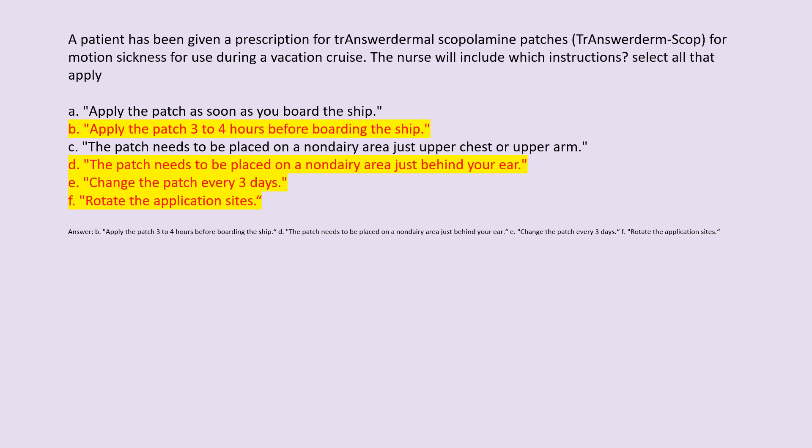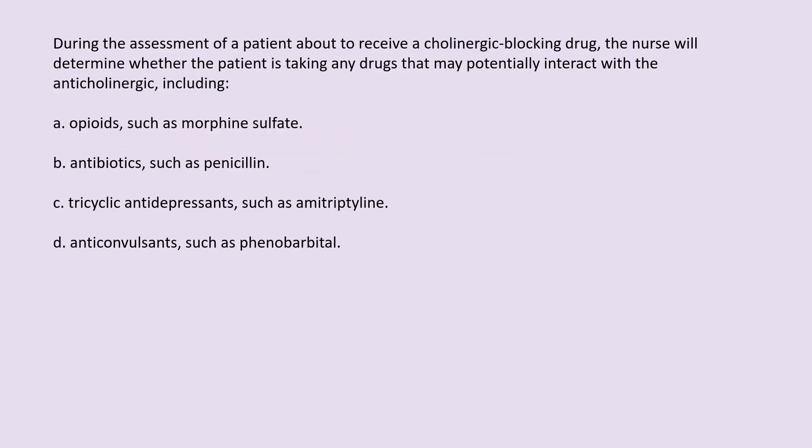During the assessment of a patient about to receive a cholinergic-blocking drug, the nurse will determine whether the patient is taking any drugs that may potentially interact with the anticholinergic, including: A. Opioids such as morphine sulfate. B. Antibiotics such as penicillin. C. Tricyclic antidepressants such as amitriptyline. D. Anticonvulsants such as phenobarbital.